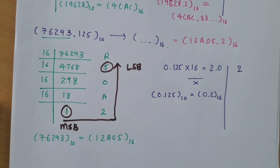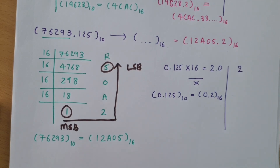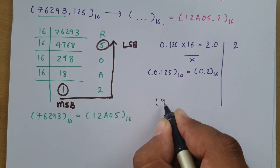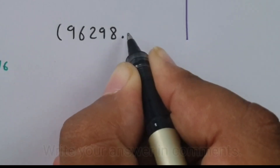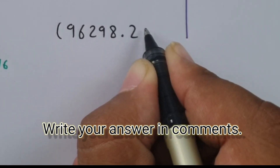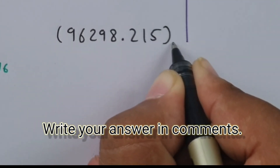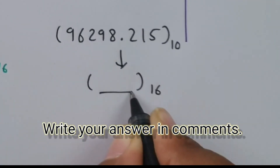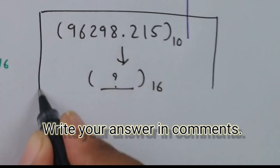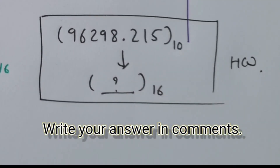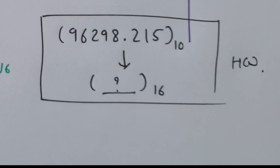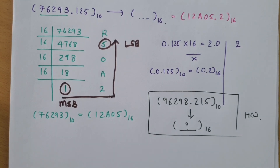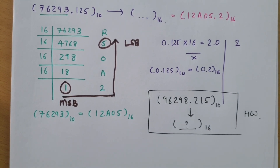For homework, solve: convert 96298.215 in decimal into hexadecimal. Write your answer in the comments and I will get back to you if any mistake is there. Thank you so much for watching. Please give your valuable suggestions so I can make better videos in the future.